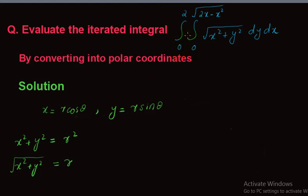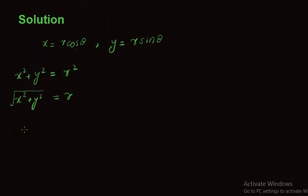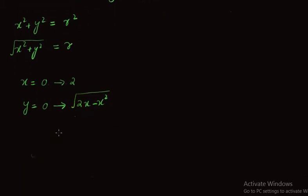For the given region, x varies from 0 to 2 and y varies from 0 to the square root of 2x minus x squared. We can write y equals the square root of 2x minus x squared, and by squaring both sides we get y squared equals 2x minus x squared.